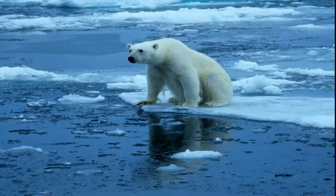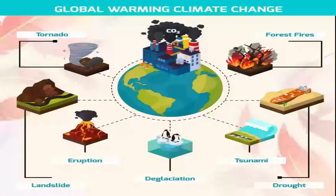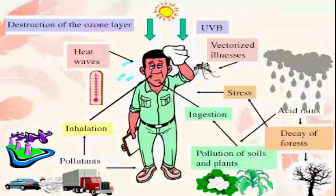Global warming is causing glaciers to melt. Sea levels are rising, which could lead to flooding of the coastal areas. Global warming also leads to climatic imbalance, which causes diseases to spread.